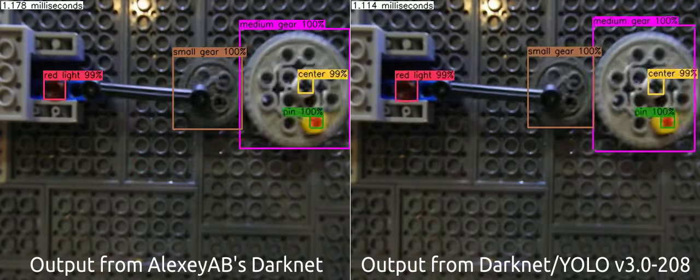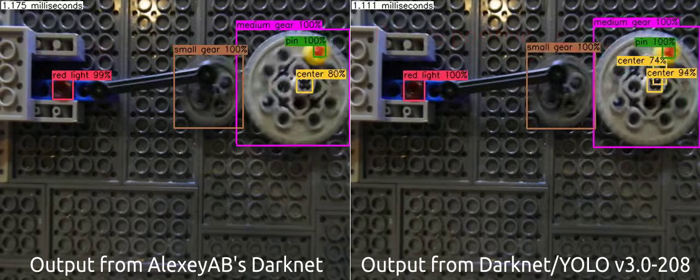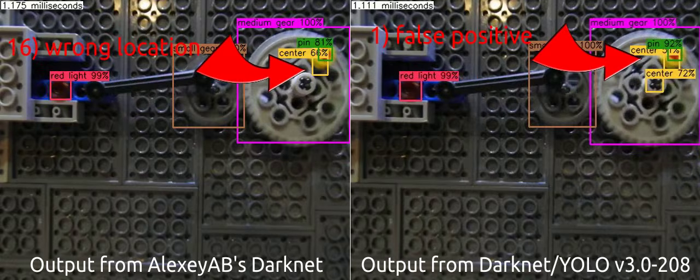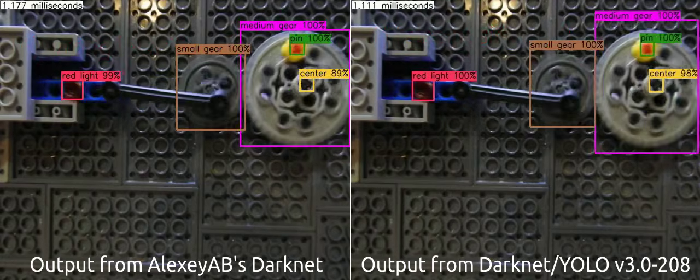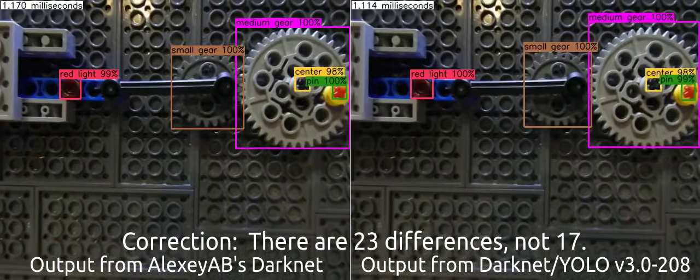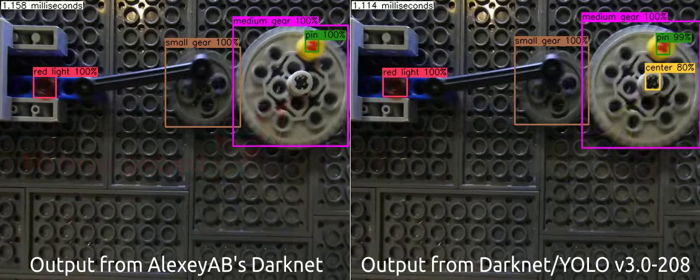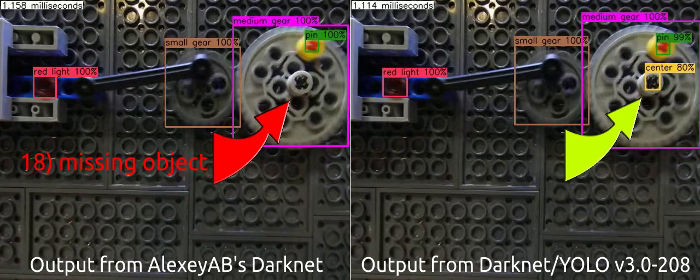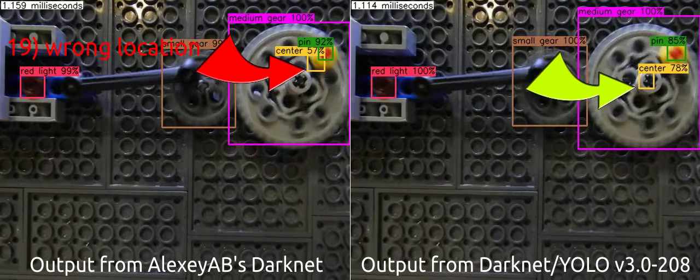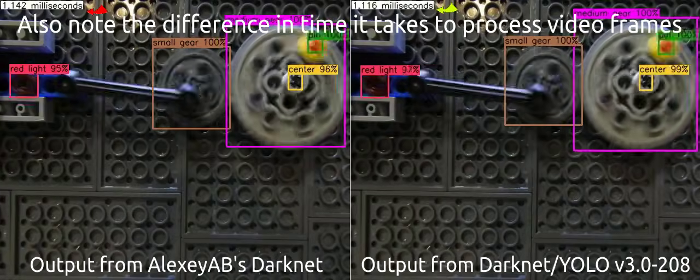I'll pause the playback of the output video to show some of the key differences between the two versions of Darknet. There are 17 significant differences in this short video I used. Most of the differences are objects which fail to be recognized. A few differences are false positives where Darknet incorrectly claims an object was detected.